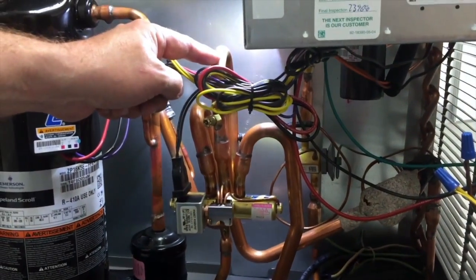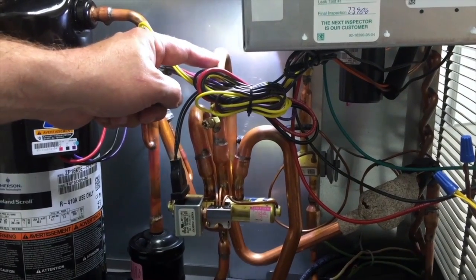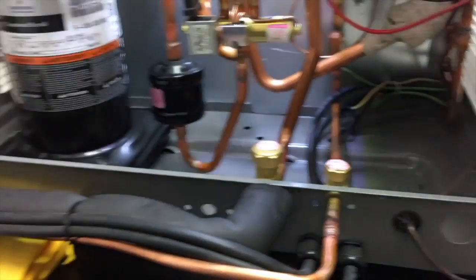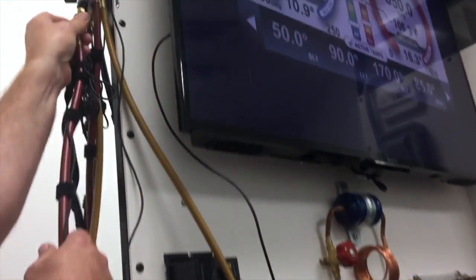This line up here is always suction pressure or always low pressure gas. For the high side, we want to hook up to the liquid line. So we're going to get the Imanifold hoses out and get everything hooked up and connected.